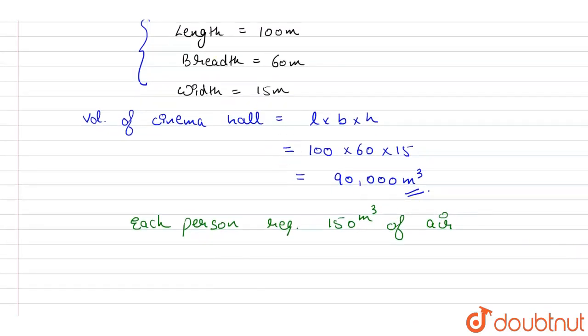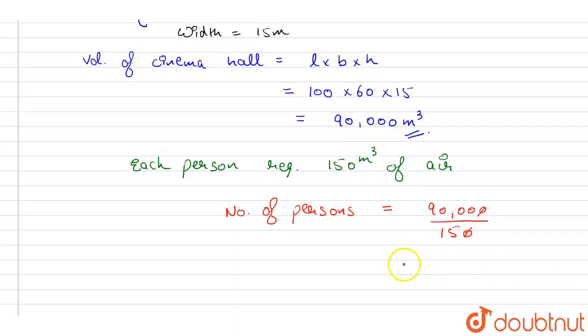Therefore, number of persons will be equal to the volume of cinema hall that is 90,000 divided by the volume required by each person that is 150. If we simplify this, we'll be getting this as equal to 600 persons.